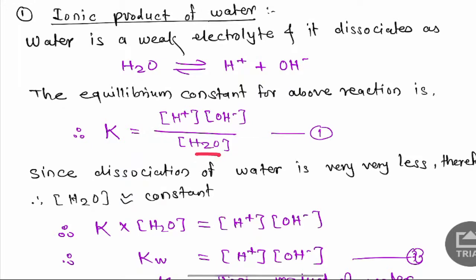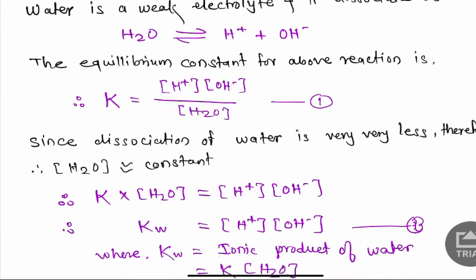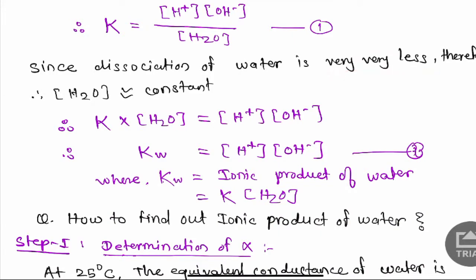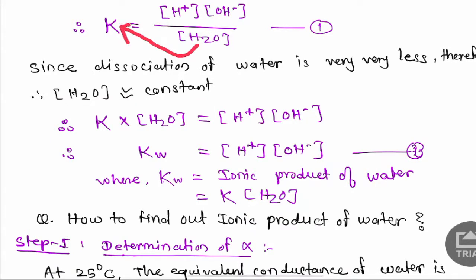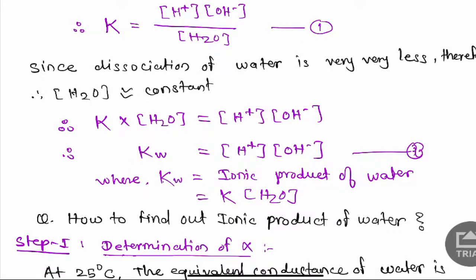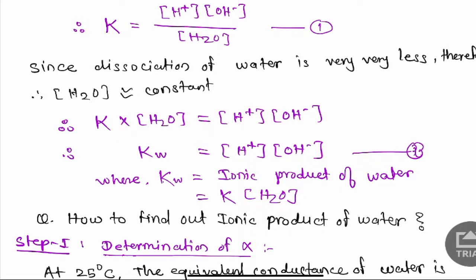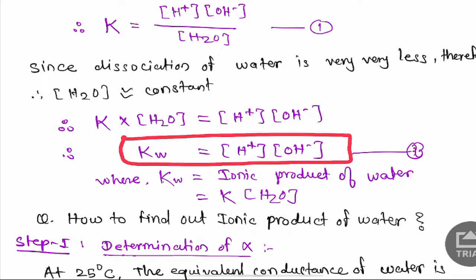Since the dissociation of water is very small, practically the concentration of water remains constant. Taking H₂O to the left-hand side, we get K × [H₂O] = [H⁺][OH⁻]. This product K × [H₂O] is nothing but Kw, and Kw is called the ionic product of water, which equals [H⁺] × [OH⁻]. This is equation number two.